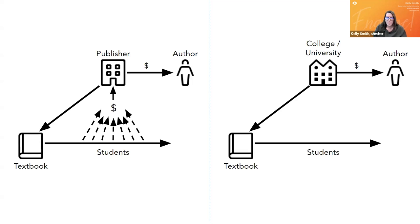There's one more thing that comes into play with both models, and that's copyright. In the traditional model, this model wouldn't work if copyright protections didn't exist. In the open model, the books published this way also have copyright. But if the intent is that the book could be freely copied and shared, then copyright isn't sufficient. To give instructors and students the intended rights to copy and share, we need the publisher to give the textbook a license that allows users to do these things.